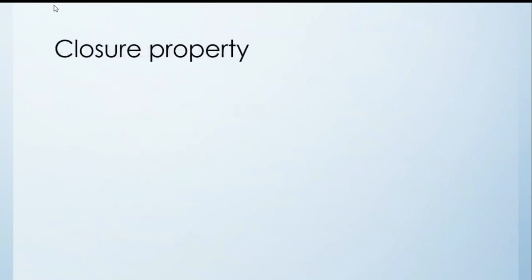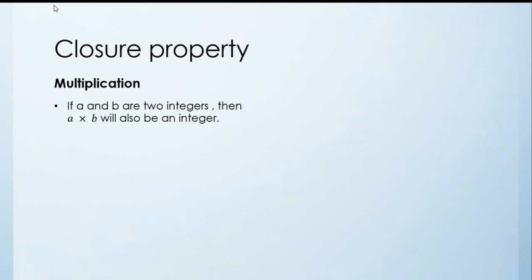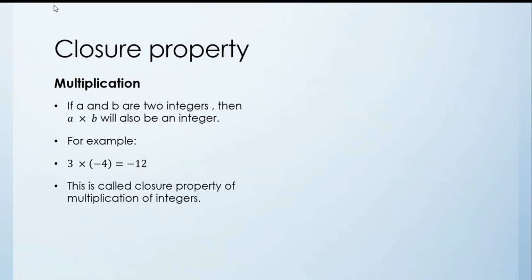Closure property — Multiplication. If a and b are two integers then a multiplied by b will also be an integer. For example, here 3 and minus 4 are both integers. When we multiply them we get minus 12, which is also an integer. This is called the closure property of multiplication of integers.